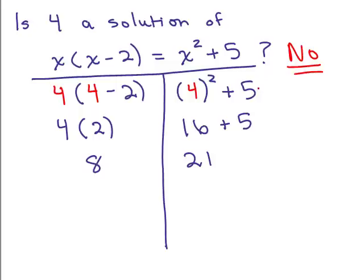It's okay to write 4 squared plus 5 without parentheses around the 4 as long as this number is positive. However, when you start working with negative numbers, it will be imperative that you do put the number in parentheses — and that's coming up.